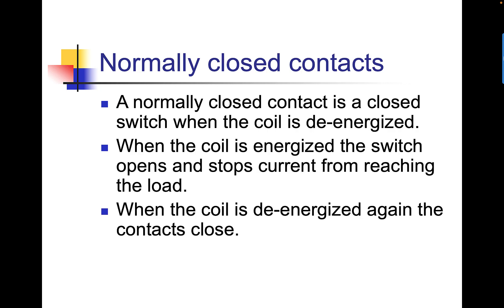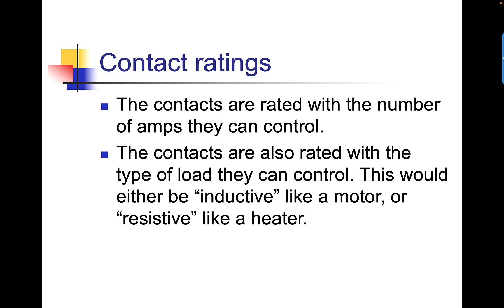Normally closed contacts are the exact opposite. They're closed when the coil is de-energized. In other words, the light switch is turned on when the coil is de-energized. When the coil is energized, the switch opens and stops current from reaching the load. When the coil is de-energized again, the contacts close again.